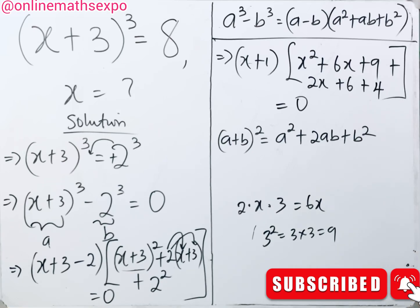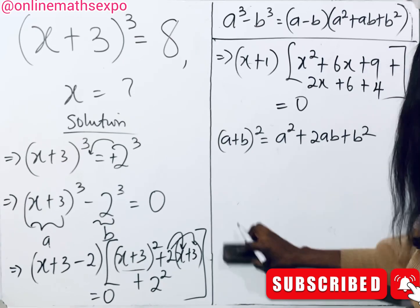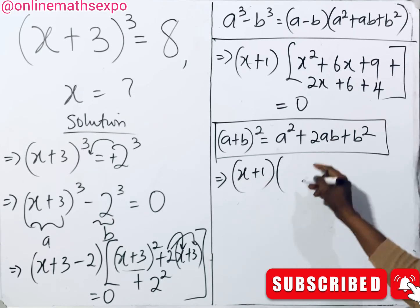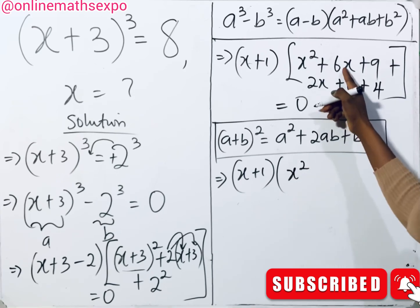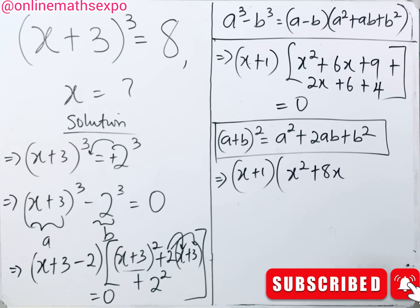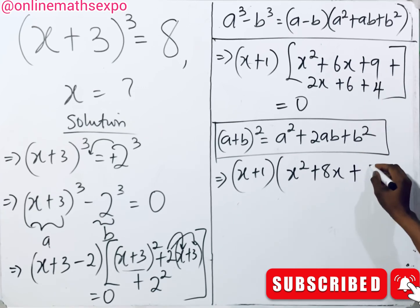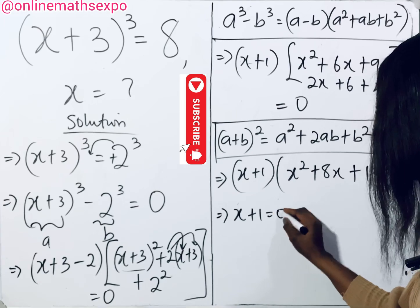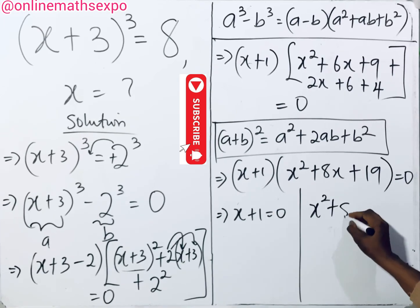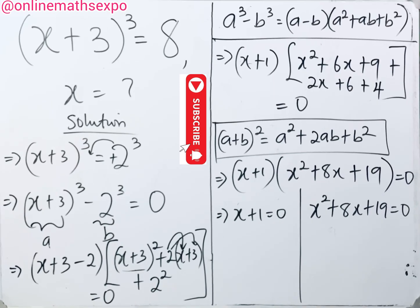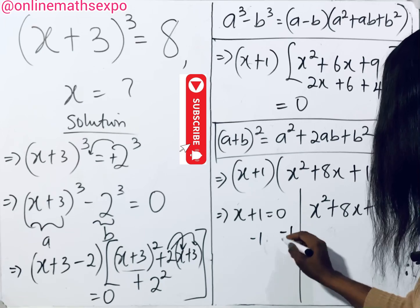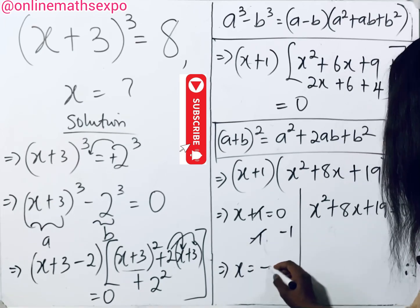Now let's simplify further. The first factor (x + 3 − 2) becomes (x + 1). Inside the second bracket, collecting x terms: x² stays, and 6x + 2x = 8x. Adding the constants: 9 + 6 + 4 = 19. So we have (x + 1)(x² + 8x + 19) = 0.